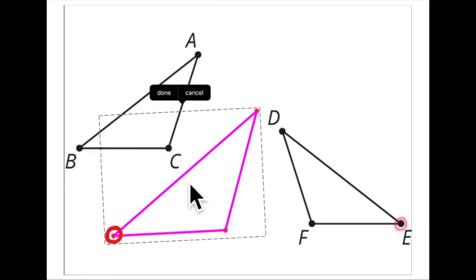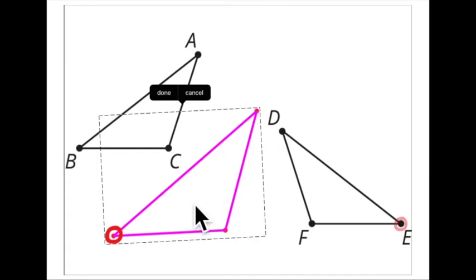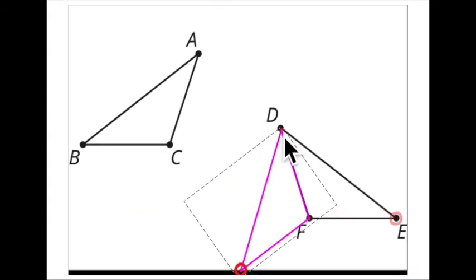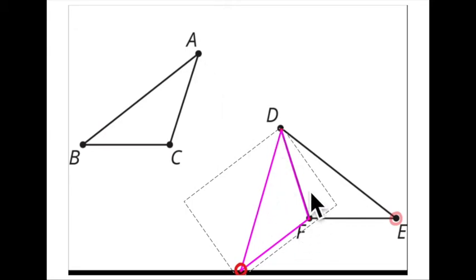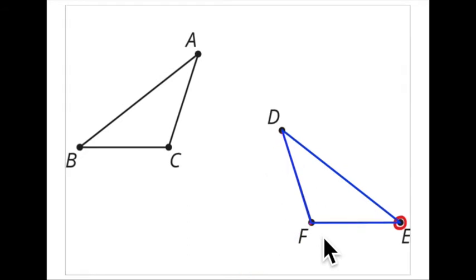Looking at it long enough, you can see it's a reflection, because if you rotate, the angles end up at opposite ends and it just doesn't work. Since it is a reflection, one way to do this is to translate this image so that point A covers point D, then rotate it so that point C covers point F. That way, this side is the line of reflection, which is easy to see, and you reflect it over that line.